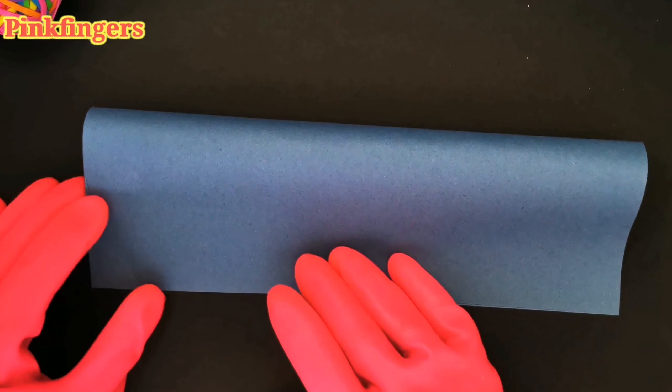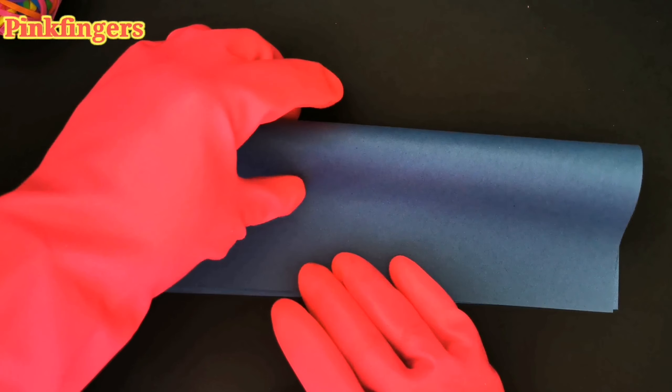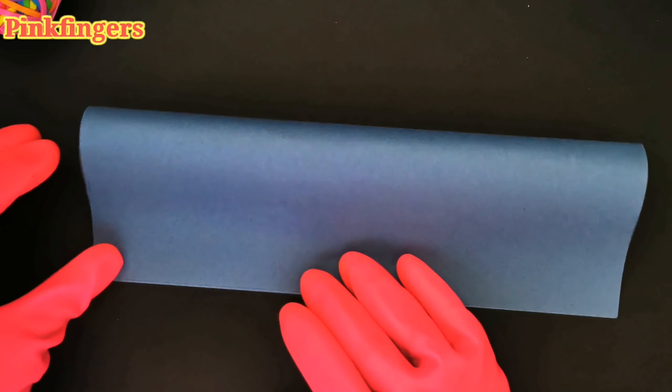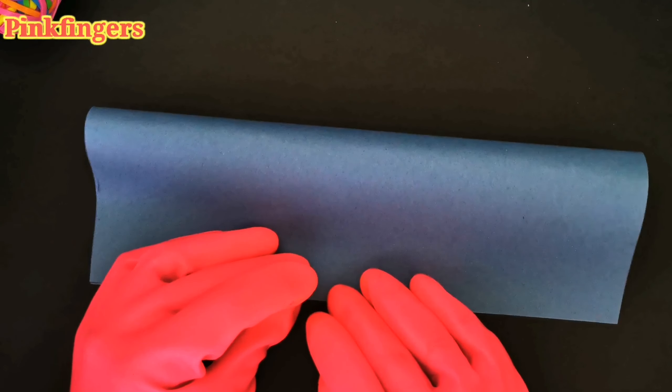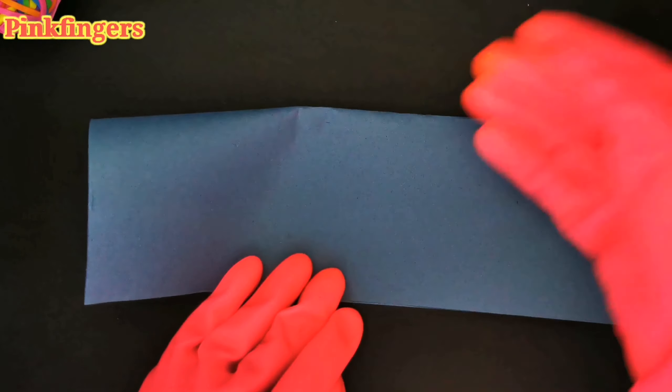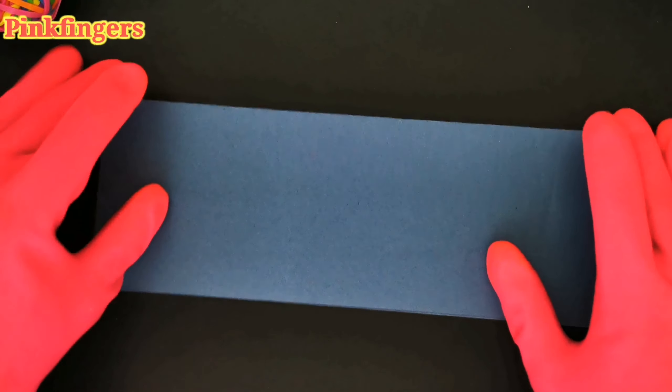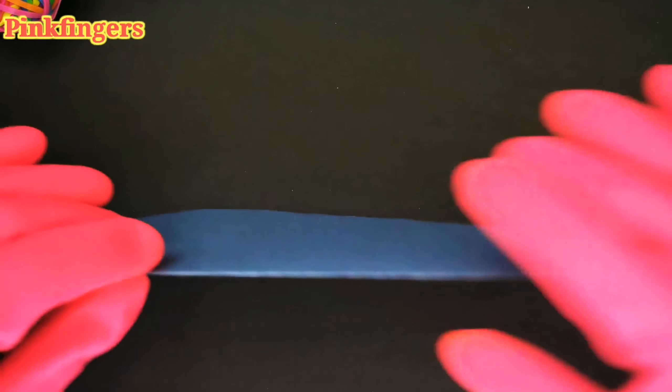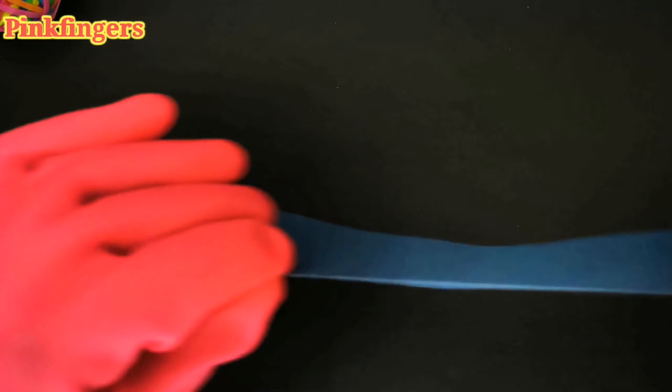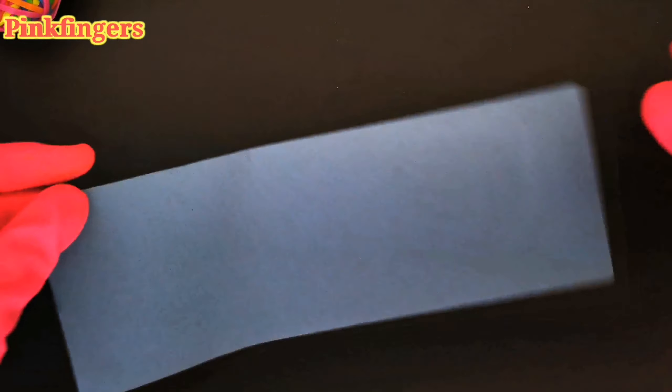So you can see we've folded it first. Fold it in half, make sure you line it up correctly, use your fingers at the bottom. Once you're happy with the crease, just press down the edges and create that nice sharp edge. Next, we open it up.